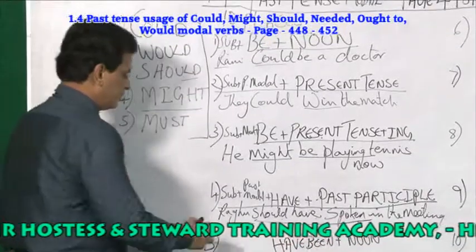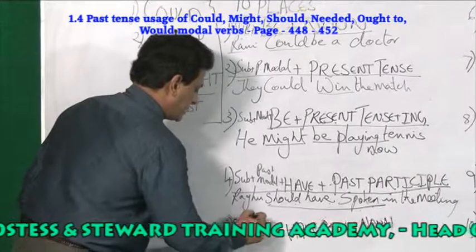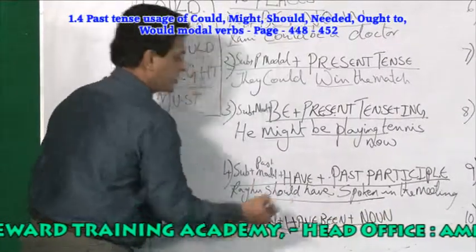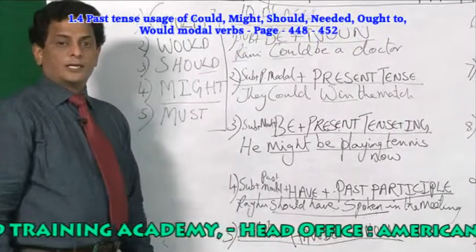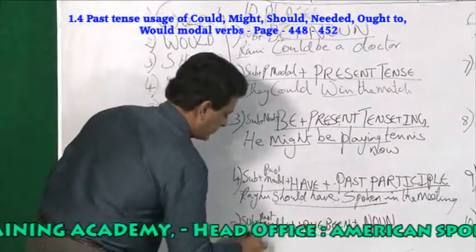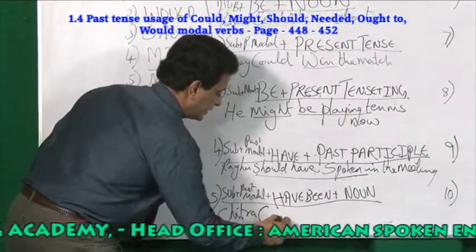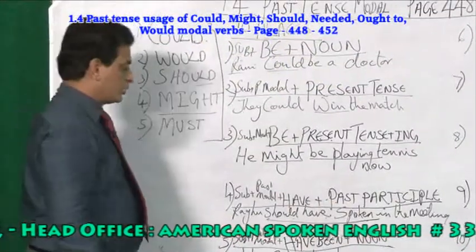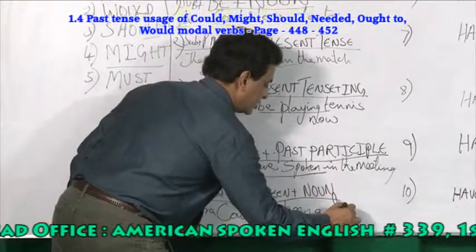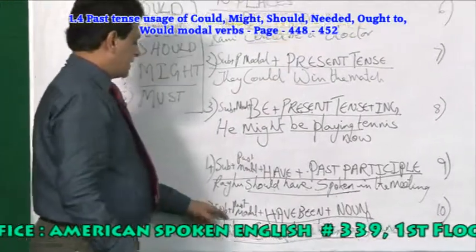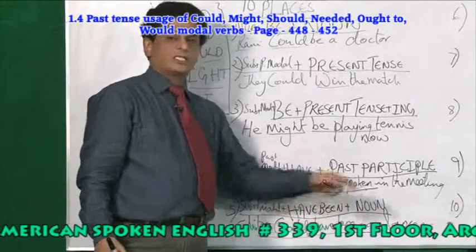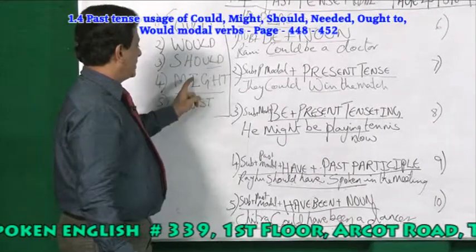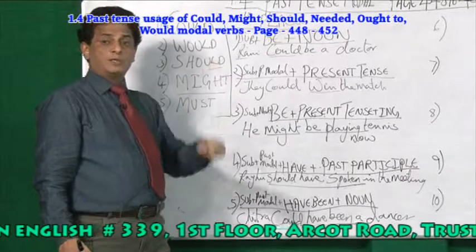Fifth place: subject plus past tense modal verb plus have been plus noun. For example: Chitra could have been a dancer. You can also say: Chitra would have been a dancer, Chitra should have been a dancer, Chitra might have been a dancer, Chitra must have been a dancer.